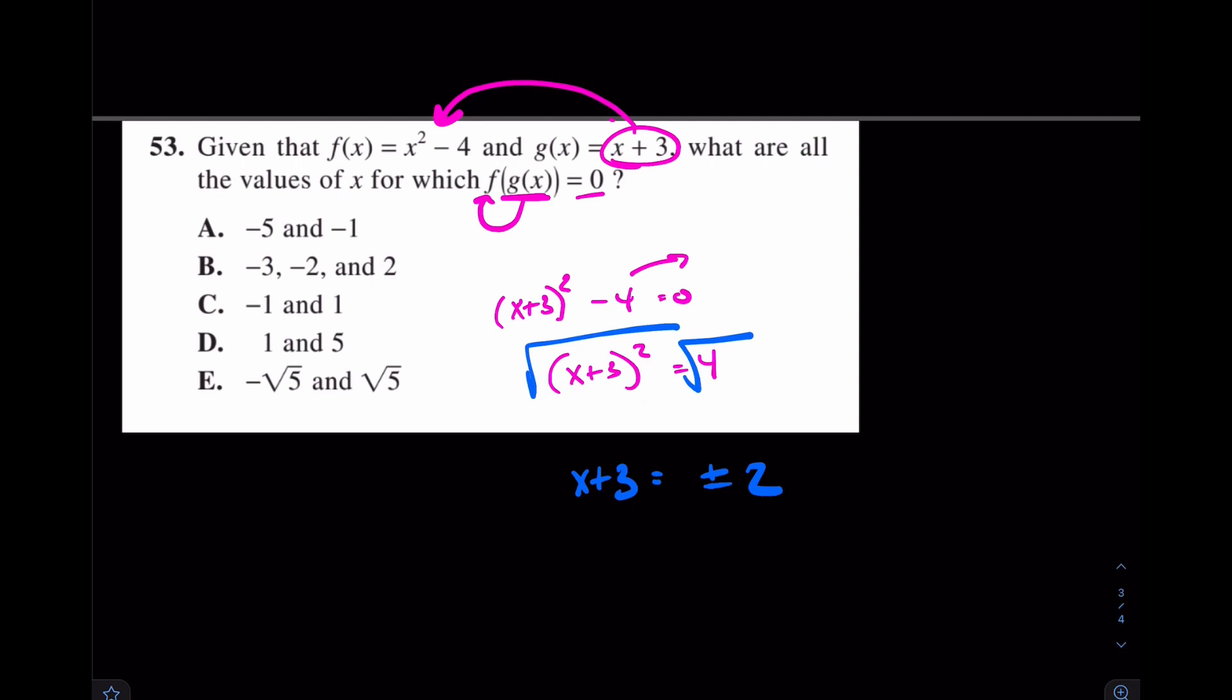And now solve the two equations, really solve the positive 2 version and solve the negative 2 version. When you subtract 3 from both sides, you end up with X equals negative 5 and negative 1. The answer is A. Like I said, there's other ways to solve that quadratic, but this is probably the fastest way.